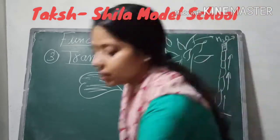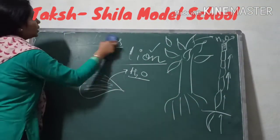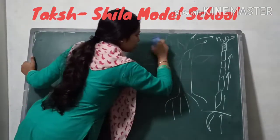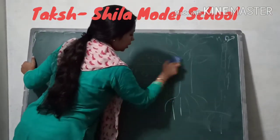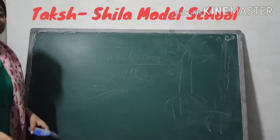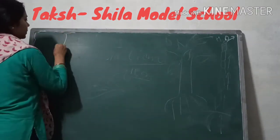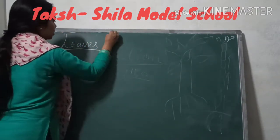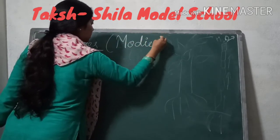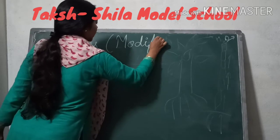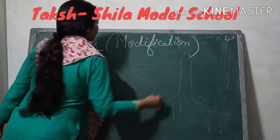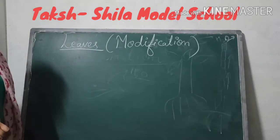Now we are going to discuss the modifications of leaves. We had previously studied modifications in roots and in stems. Now we will look at modifications in leaves — how a leaf changes into something else according to its situation, environment, or conditions.